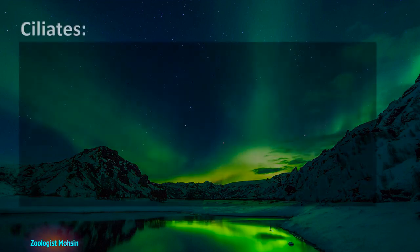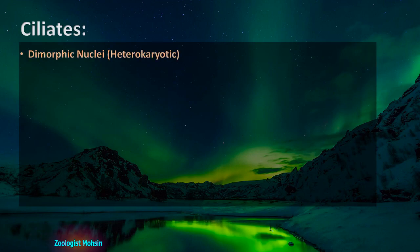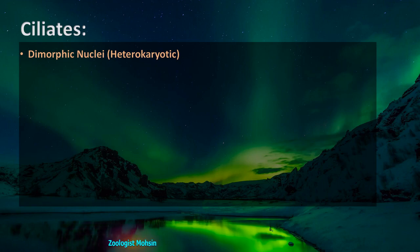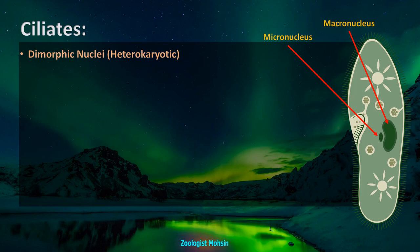Let's have a brief look at the salient features of ciliates first. Ciliates have dimorphic nuclei, meaning that they are heterokaryotic — having different nuclei. In paramecium you can see a smaller nucleus which is the micronucleus, and a larger one which is the macronucleus.